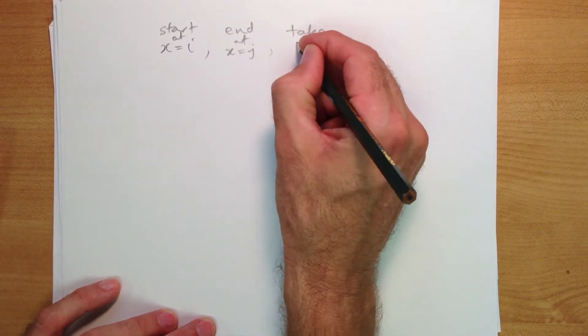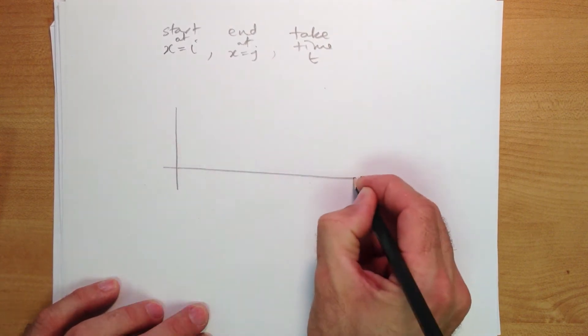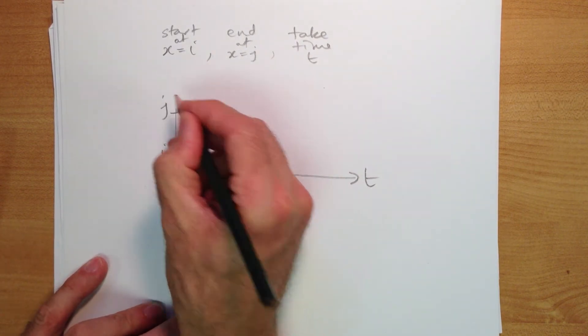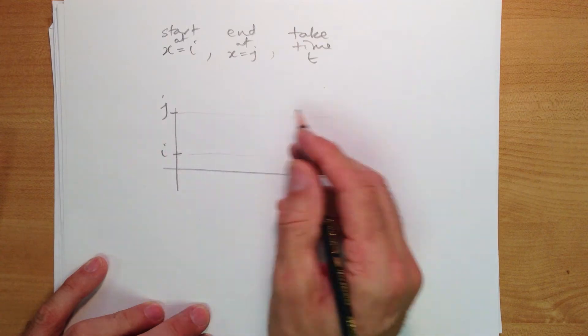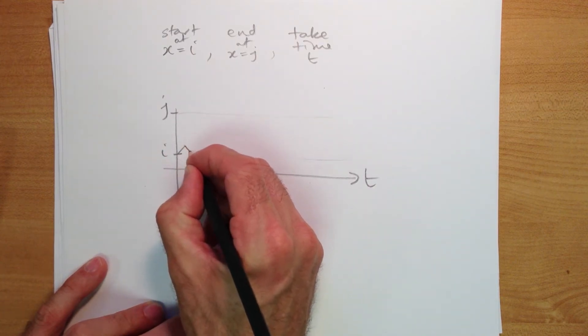So visually this might look like this. We have t here, and here's i and j. We have our little random walker starting here at i, and they take a walk.